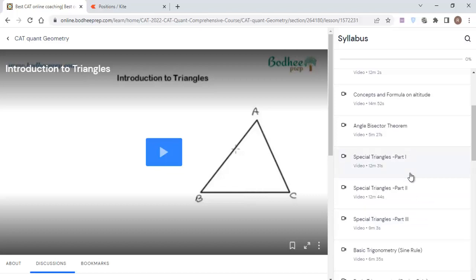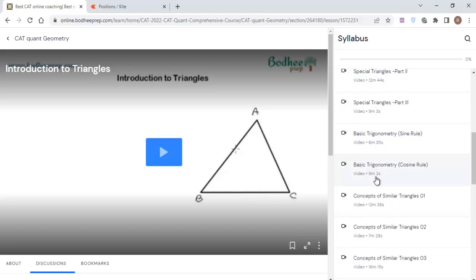Then special triangles, as I said. I have divided them into three parts. Each part I have dealt with in detail: what are the special triangles, how to deal with them, and how to identify when a question appears. Then how do we identify that it's a question of special triangles and which special triangle we have to apply. Then you can skip the basic trigonometry right now.